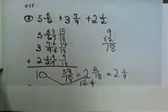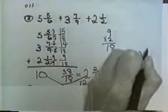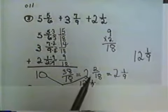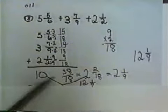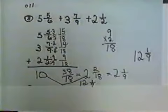So what I'd need to do then is put my 10 and my 2 together. That would give me 12 and 1 ninth as my answer, because my 38 eighteenths became 2 and 2 eighteenths, which was 2 and 1 ninth, so I had to add the 10 and the 2 together, and that gave me 12.